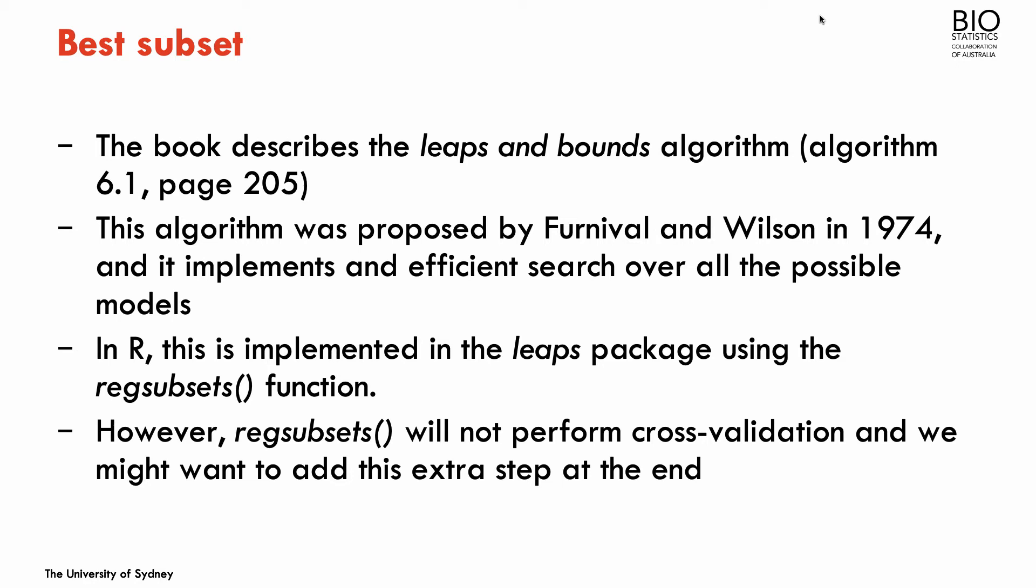So the book describes an algorithm, it's called Leaps and Bounds, and this was proposed quite a while ago. And it's basically a speed-up, it speeds up the search for the best subset of predictors by discarding some models. So it will not fit all the models, it will discard some of the models, because some theoretical results allow us to know that those models will not perform better. But still, it's quite computationally intensive. In R, there's a package called leaps that has the regsubsets function that implements this algorithm. And we're going to use this in this first part to implement the search for the best subset selection.